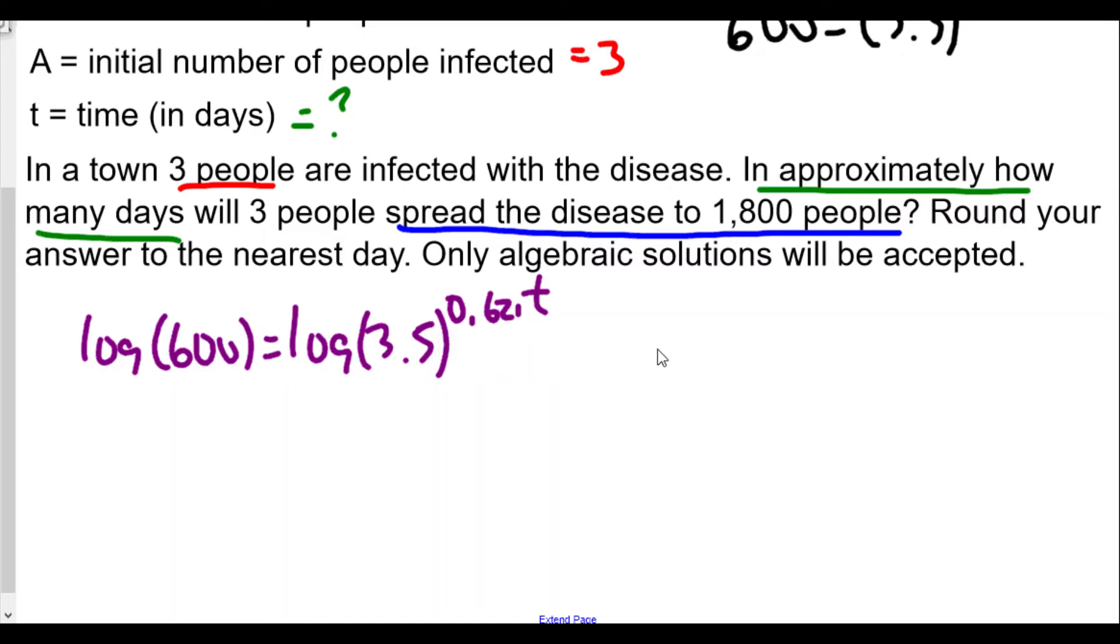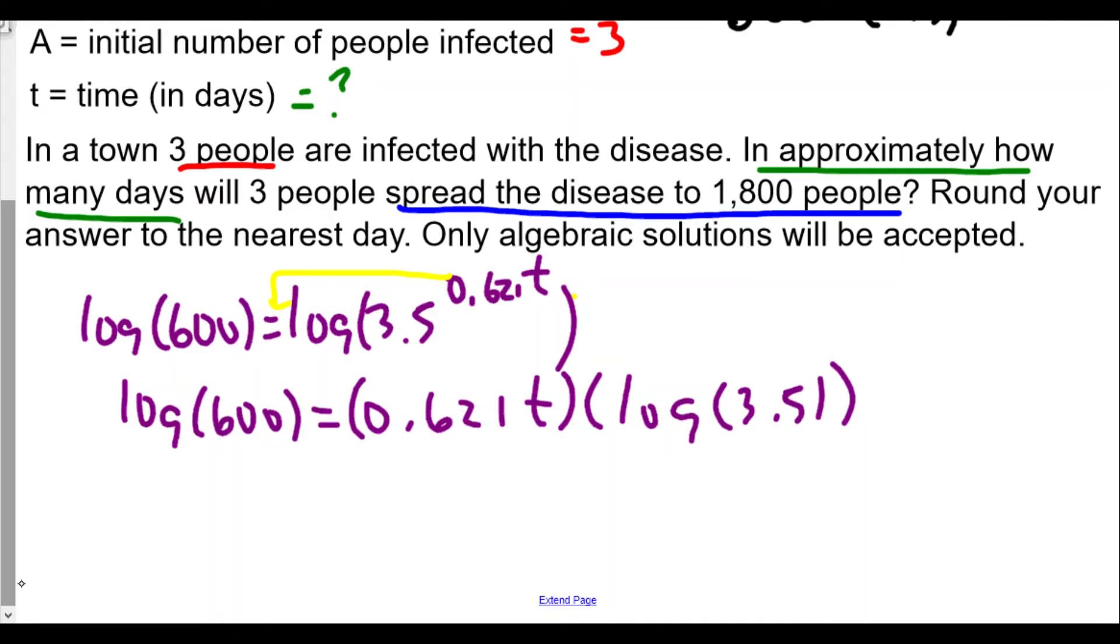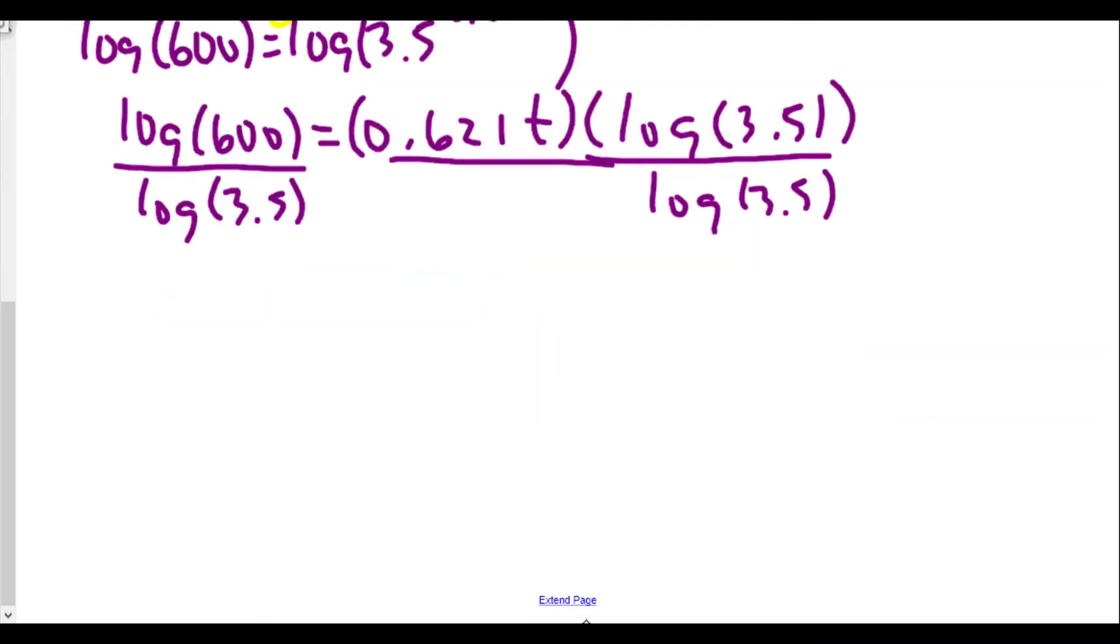We're going to bring this exponent down so it's no longer in the exponent place. This exponent is inside of the input for log. After we use the power rule, we're going to get log(600) = 0.621t times log(3.5). Now to isolate t, the very first thing we'll do is divide both sides by log(3.5). These divide out, and now we have log(600) / log(3.5) = 0.621t. I want to show this work, ladies and gentlemen. Do not take any shortcuts. You want to show every single step to make sure you get full credit for this problem.